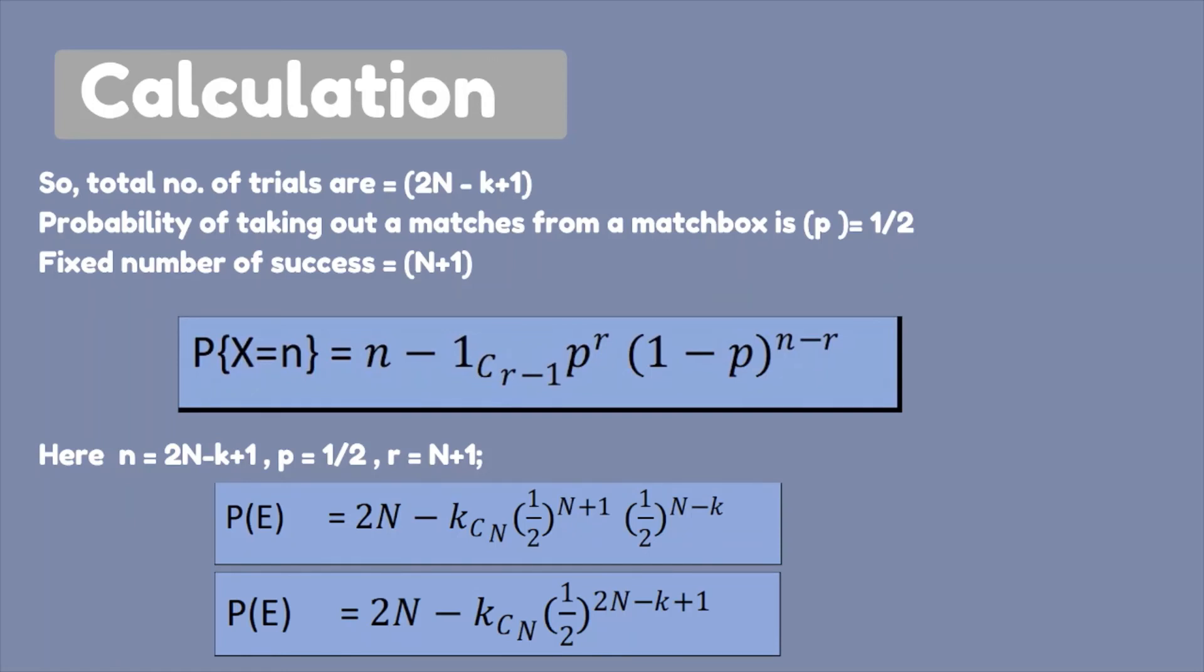So our result will be like P(E) equals to 2N minus k choose N, half to the power N plus 1, half to the power N minus k. So our probability of this event to occur will be 2N minus k choose N, half to the power 2N minus k plus 1.